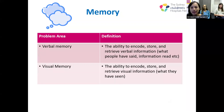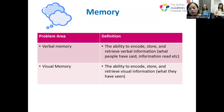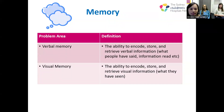Memory refers to the process of encoding new information, retaining it over time, and retrieving it later. Individuals with memory impairments may have difficulties at any stage: encoding new information, storage or retention, or recall after a delay. In the classroom this may result in inability to learn a new student's name, forgetting to bring completed assignments on the due date, or difficulty remembering lesson content from one day to the next. Memory is dependent on attention, information processing speed, organizational strategies, effort and self-monitoring, so poor memory performance may be attributable to other impaired cognitive factors.